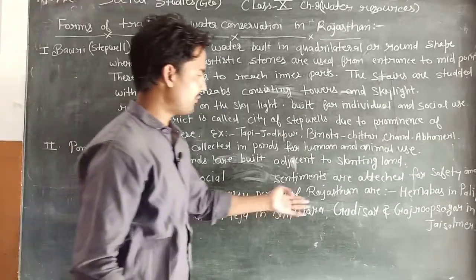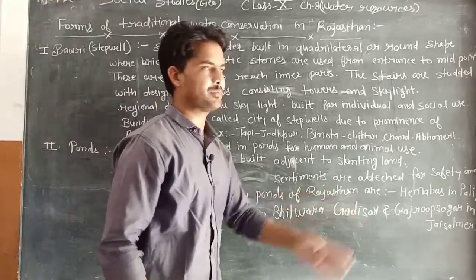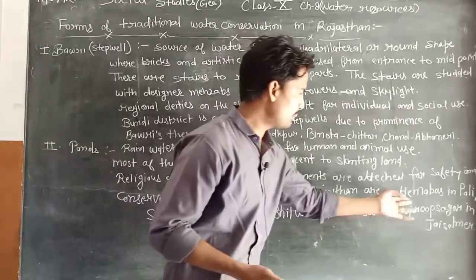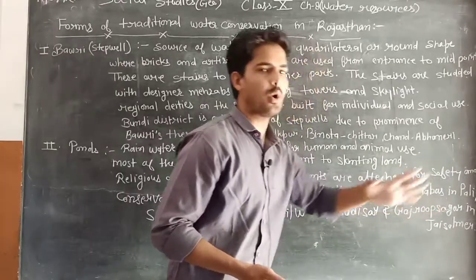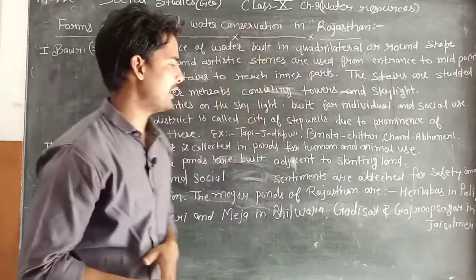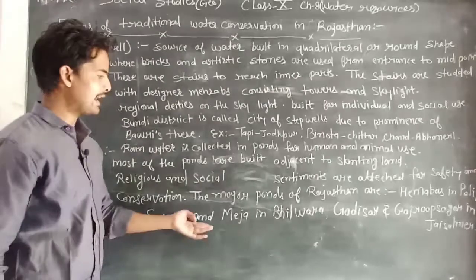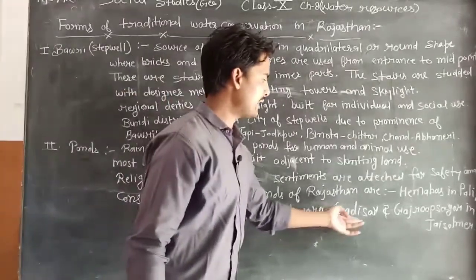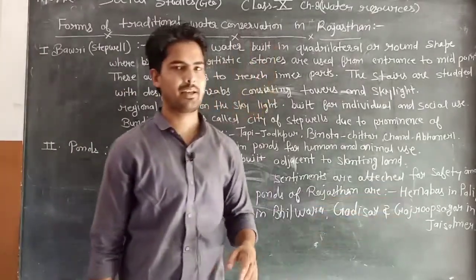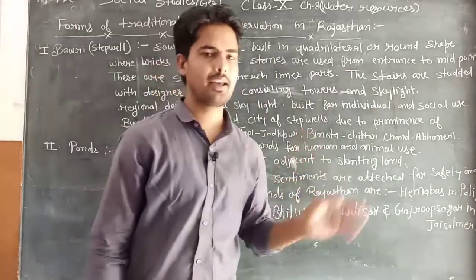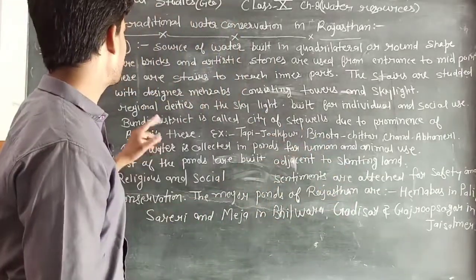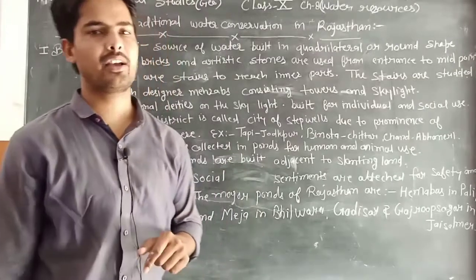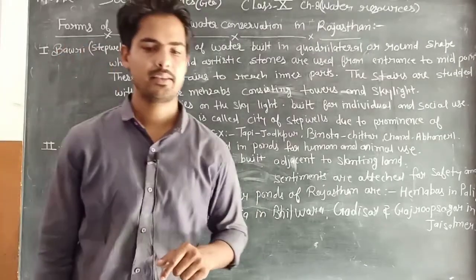The major ponds of Rajasthan include: Hemawas Pond in Pali, Sareri Pond in Bhilwara, and Gadisar and Gajrup Sagar in Jaisalmer. These are two sources of traditional water conservation in Rajasthan. We will see more forms in the next class. Thank you.